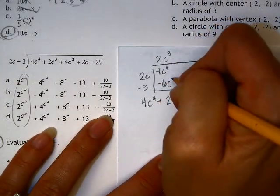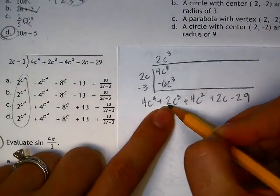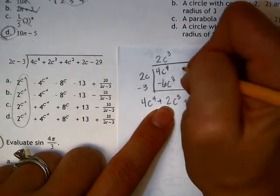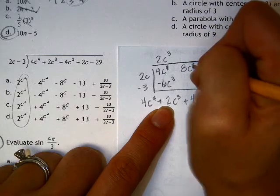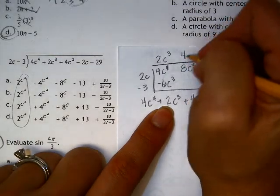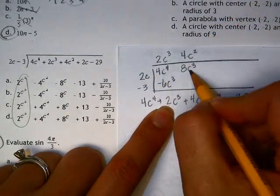So then when I multiply those, I get this. Now I need to have a 2, but it needs to be positive. And right now I have a negative 6, so I need 8 to make that happen, which means I need a 4c squared to make that happen.